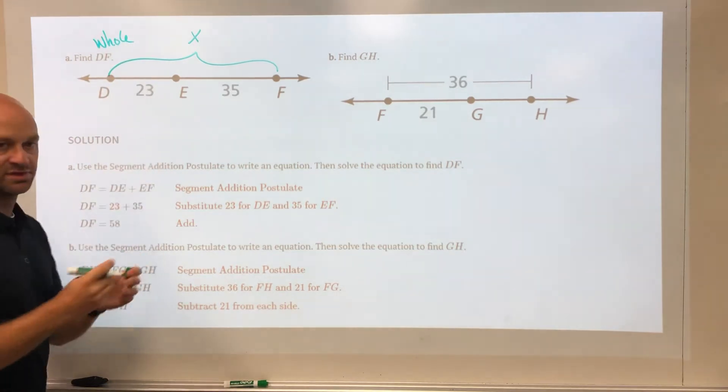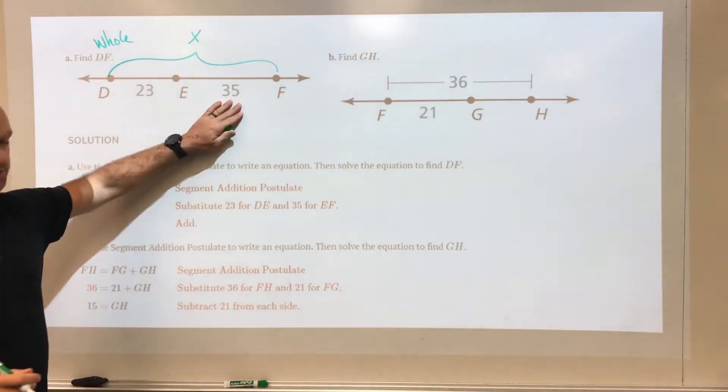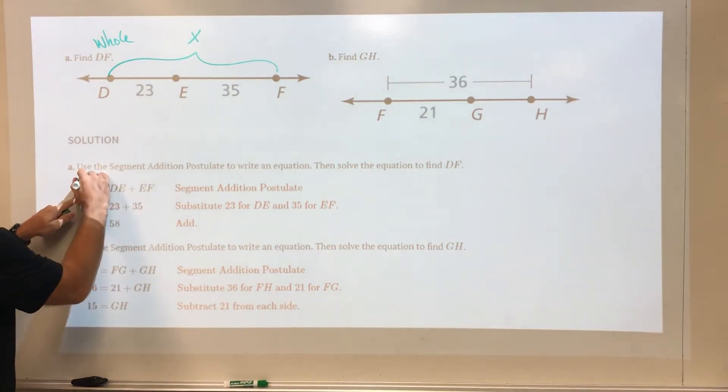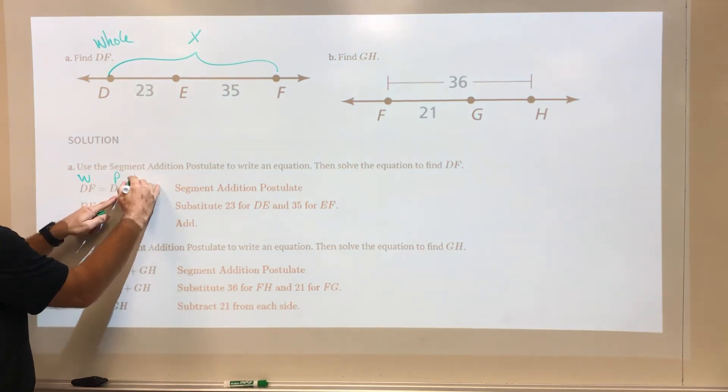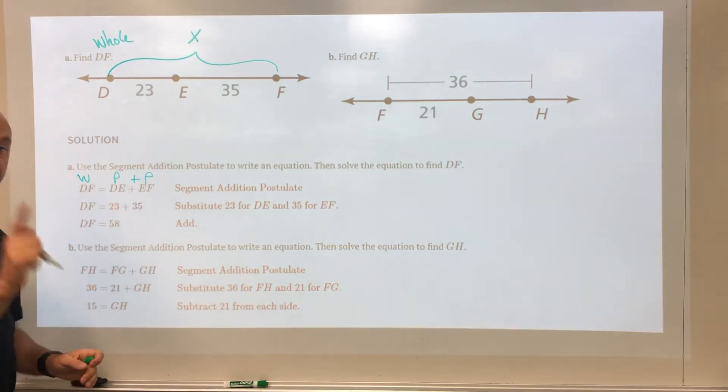So how do we find the whole thing? We add up the two parts. So 23 plus 35, which they show you here, gives you the total. So DF is the whole, DE is the part plus the part.